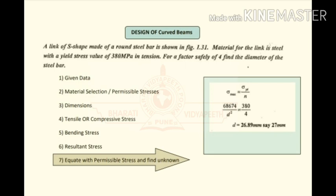Finally, to find the diameter, we equate the permissible stress to the induced stress. Permissible stress = yield stress / factor of safety. The induced stress we calculated is 68674 / D², which we set equal to 380 / 4. From that, we can find the diameter D.